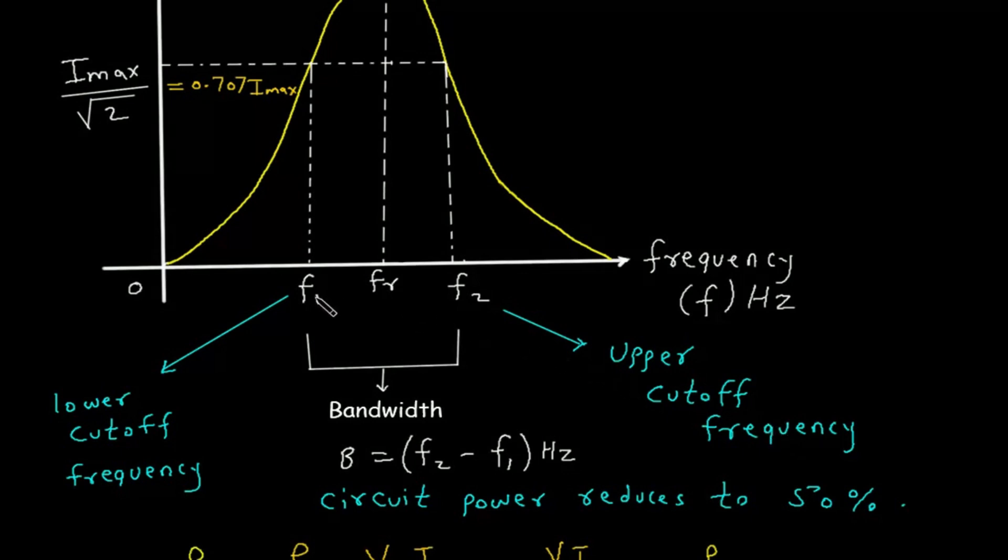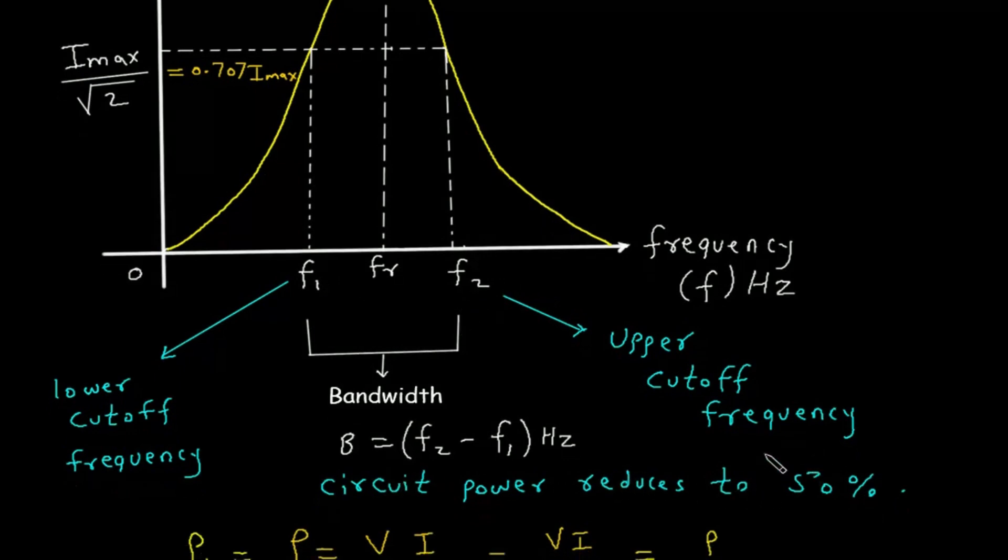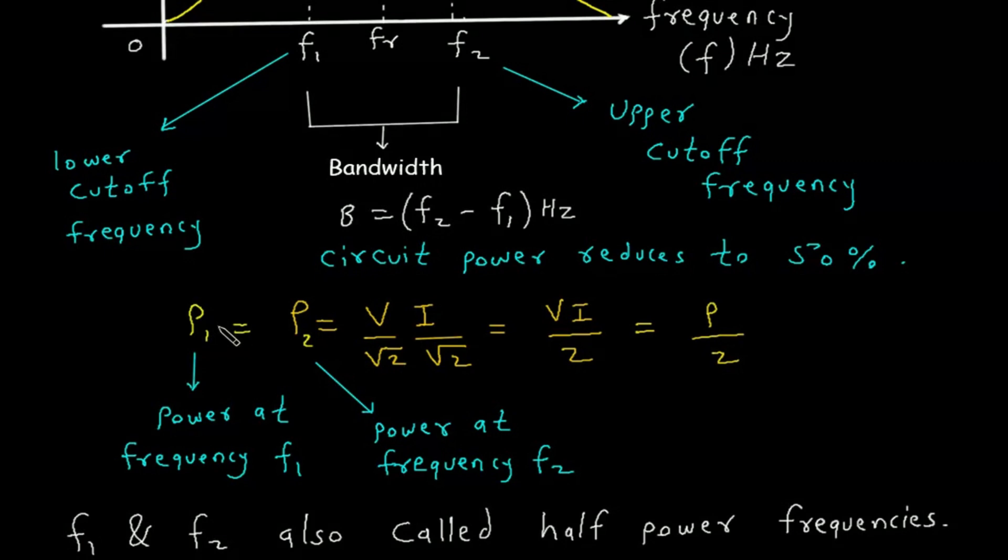At F1 and F2, the circuit power reduces to 50%. P1 is the power at frequency F1 and P2 is the power at frequency F2.